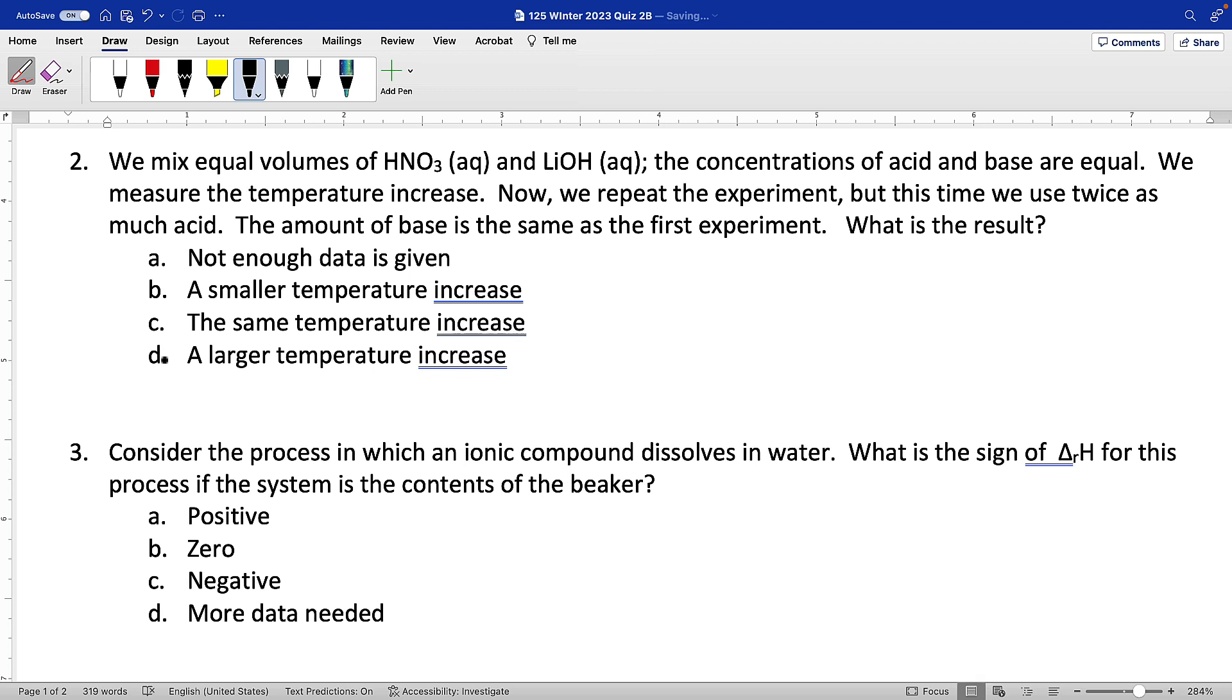Number two. We're mixing acid and base. We imagine equal volumes and equal concentrations. So that means the moles are the same. If we write out the reaction, we've got a monoprotic acid reacting with a monobasic base, one to one stoichiometry to give us lithium nitrate and water. If we have equal moles of both, we'll have nothing left over. Nothing's limiting.